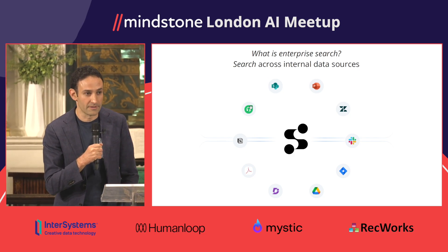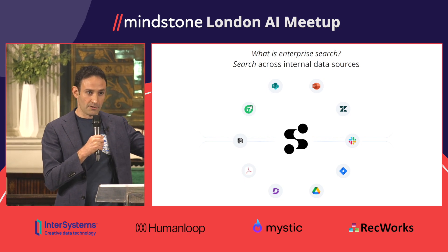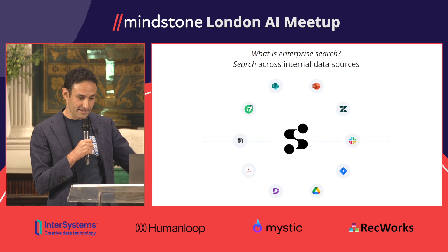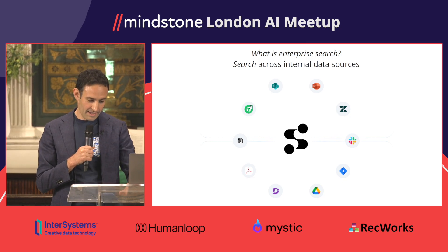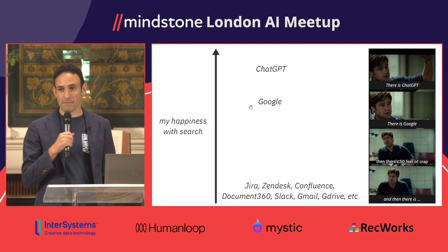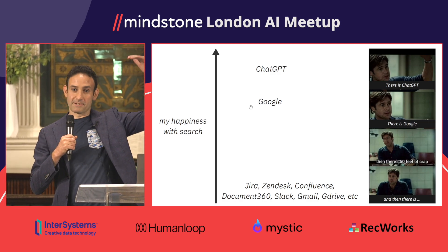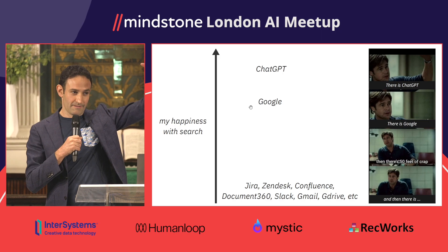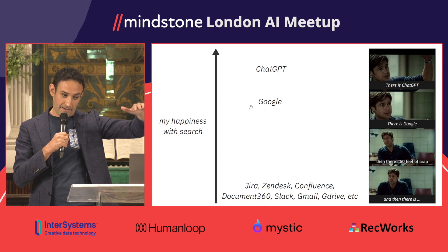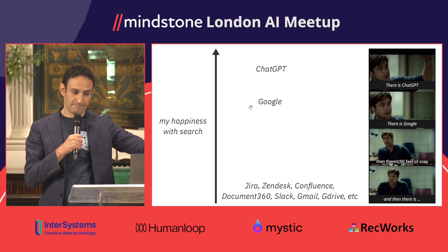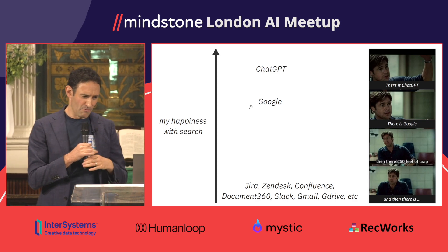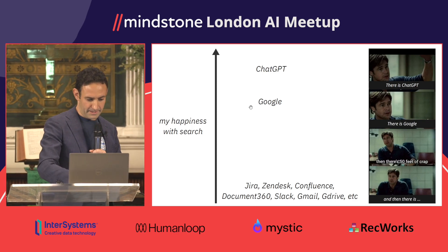Enterprise search refers to searching for answers across your internal data sources — whatever they are: knowledge bases, Google Drive, Gmail, ticketing systems, Notion, and so on. If I want to describe my happiness with those systems: we have ChatGPT, which is really cool; then Google, also very cool but not quite as cool as we just saw; and then there is enterprise search — is it really that bad?